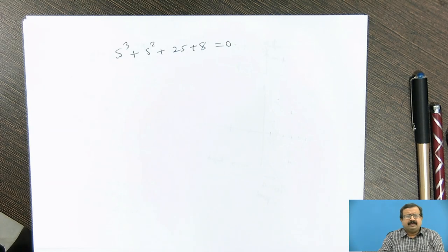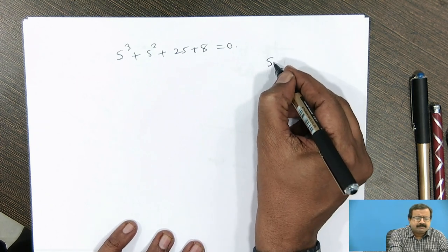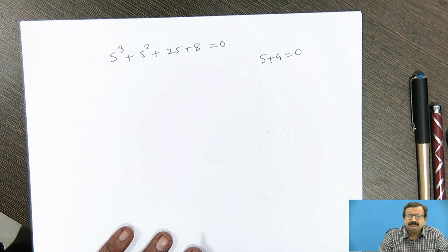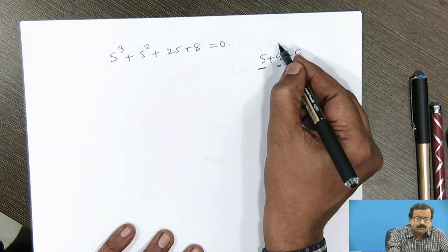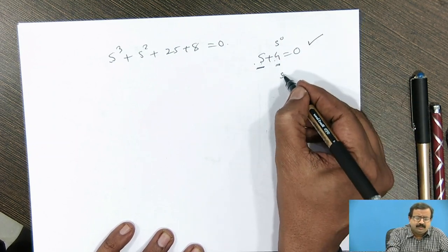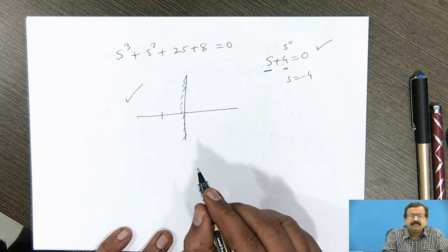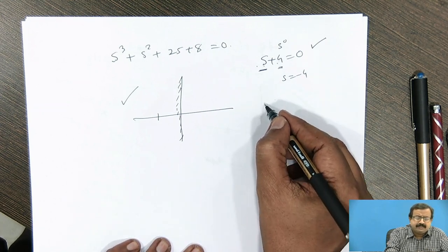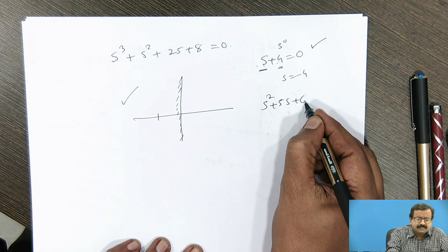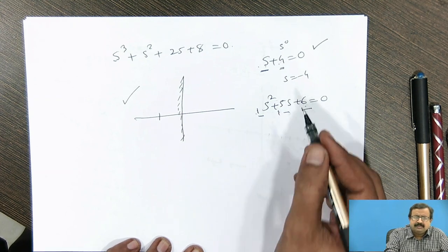In the last module we saw that if the characteristic equation is a polynomial of degree 1 or degree 2, a degree 1 equation like s plus 4 equals 0 is always stable because its root is minus 4, which lies on the left half of the s-plane. For a quadratic equation like s² plus 5s plus 6 equals 0, if it is a complete polynomial and all coefficients have the same sign — all positive — then the system is guaranteed to be stable.